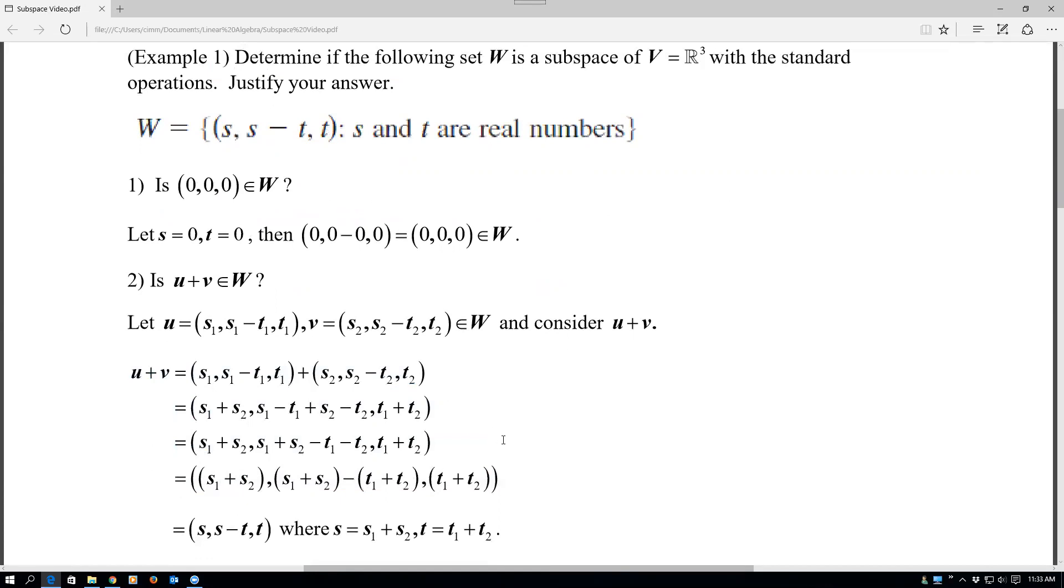I notice that this has the same form as the starting point. And to do that, to show that even more clearly, I'll just let S, another variable, equal the sum of the S's and T equal the sum of the T's. So now you can see that that's exactly like what we started with. So yes, we do have closure under vector addition.